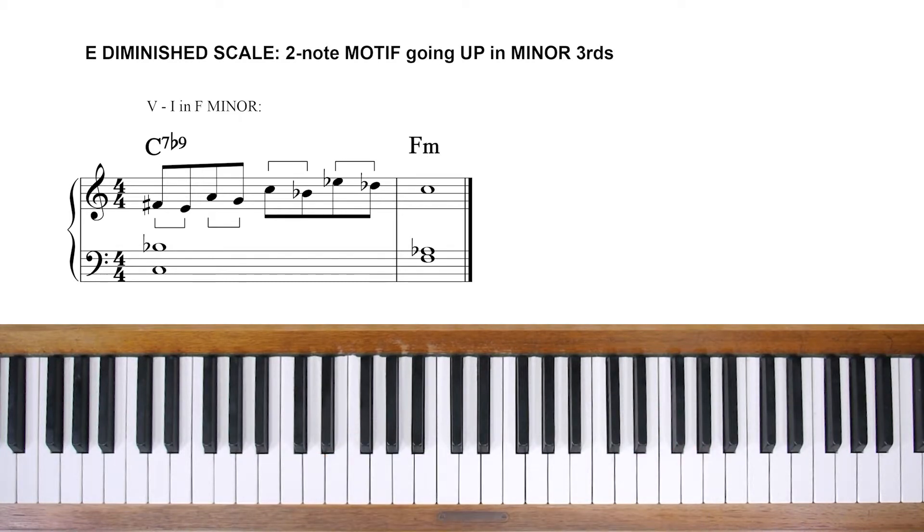Now, as we saw earlier, E diminished 7 is part of a family of four chords that all share the same notes and are a minor third apart. This means that the pattern we played just now not only works over C7, but also E flat 7, F sharp 7, and A7, all of which should have flat 9s.